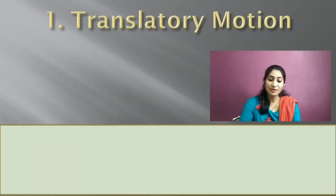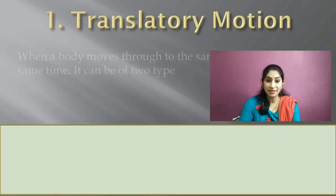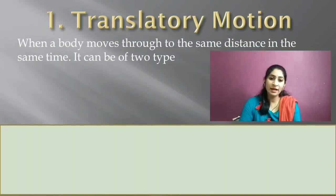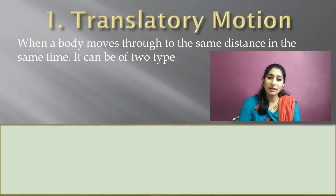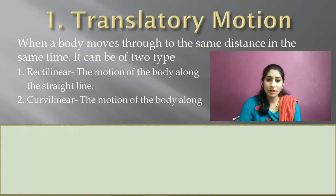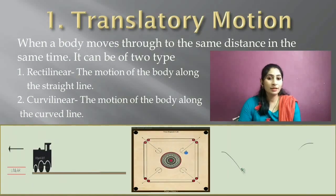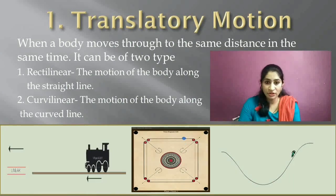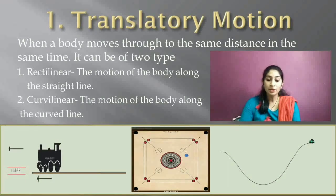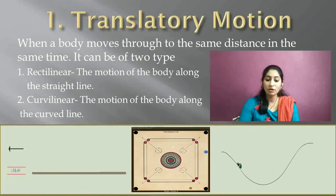Translatory motion is when a body covers the same distance in the same interval of time. For example, if I move in a straight line covering two meters, then change to a curved path but still cover two meters in the same time interval, I am in translatory motion — because I am covering the same distance in the same time, even though the path may change. Translatory motion can be rectilinear or curvilinear.